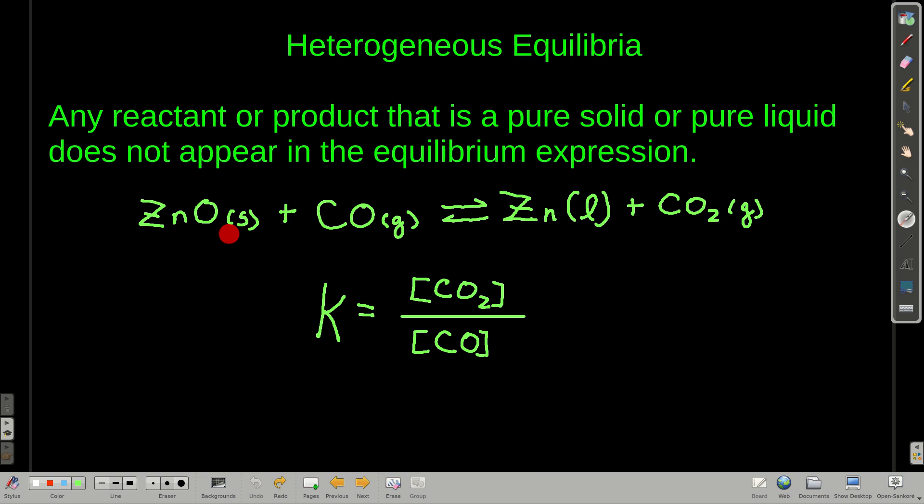Well, even if we take some of the zinc oxide away, its concentration doesn't change. How many moles per liter? If we take one of these away, we have fewer moles, but we have a smaller volume too. So, because it's not changing, it does not affect the equilibrium constant and it does not appear.